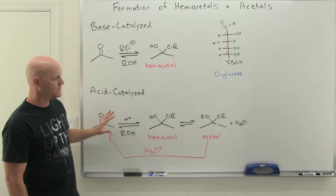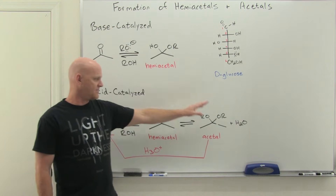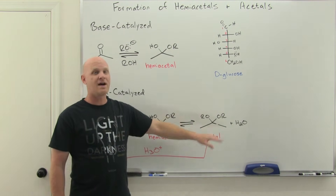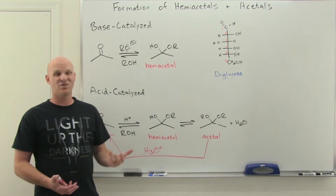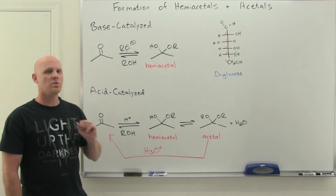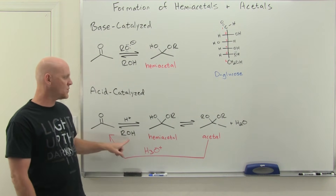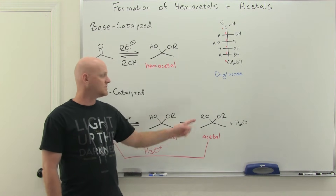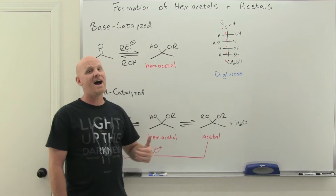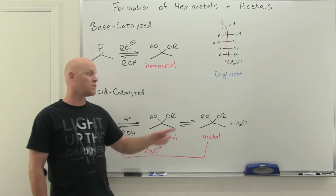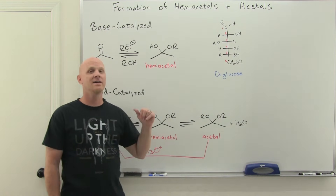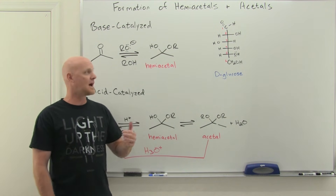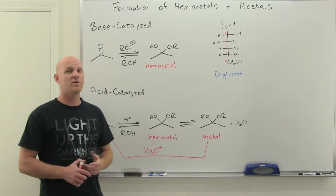For a typical ketone, the equilibrium constant for acetal formation is not great, and for an aldehyde it's only okay. However, one useful trick: instead of using two equivalents of a simple alcohol, if you use a diol you form a cyclic acetal instead. This cyclic acetal can be used as a protecting group, with unique applications for retrosynthesis, as we'll see shortly.